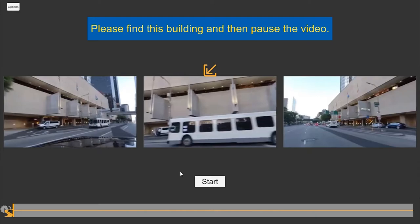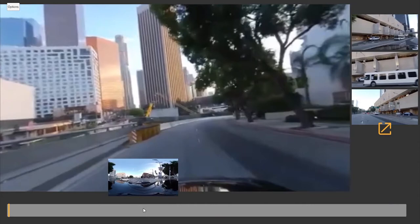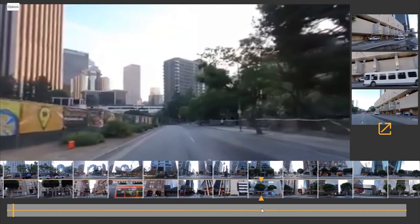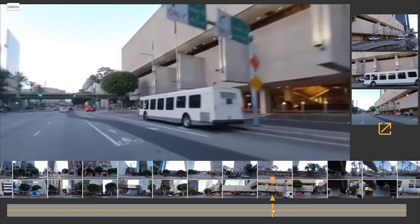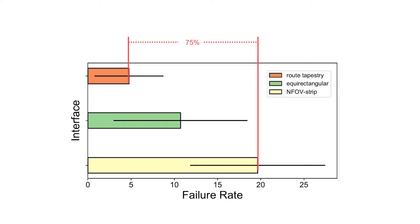We compared route tapestries with two baseline interfaces using a target-seeking task. One interface uses equirectangular frame previews and is modeled on the YouTube 360 video player. The other interface uses two rows of normal field of view thumbnails as its previews — a discrete alternative to route tapestries. Our results show that route tapestries allow users to locate targets 22% faster than with YouTube-style equirectangular previews and reduce the failure rate by 75% compared to the row of thumbnail previews.